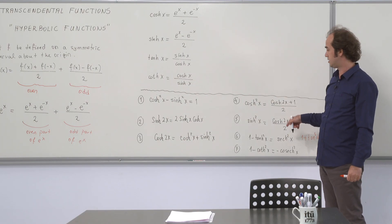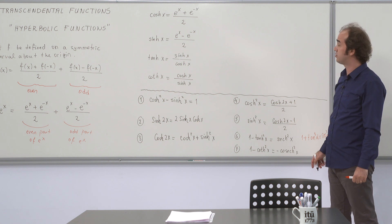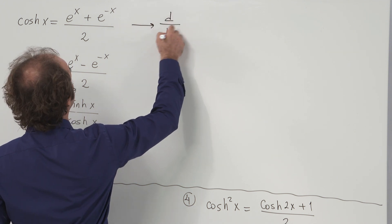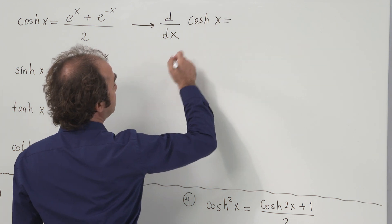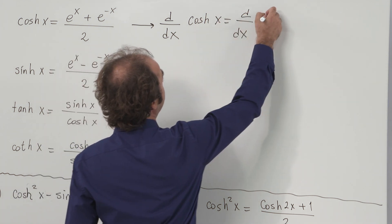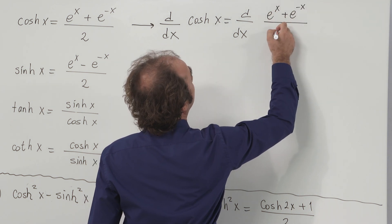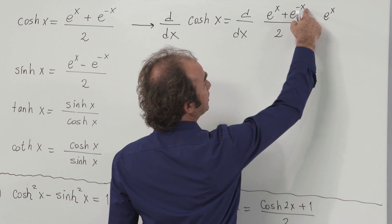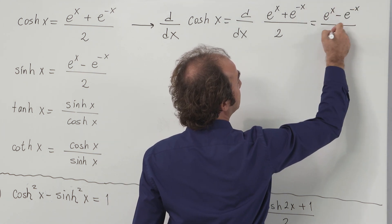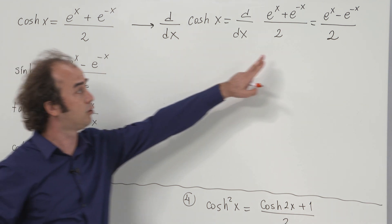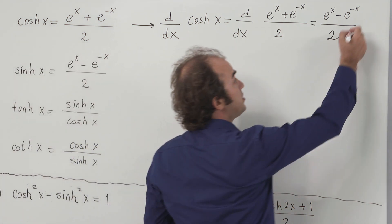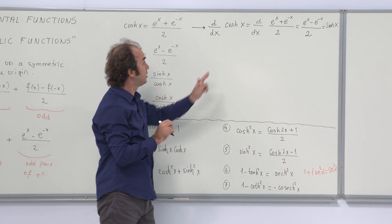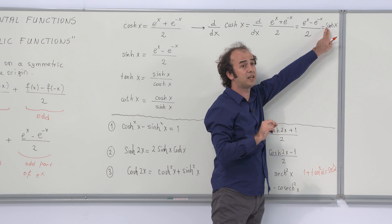After seeing these basic identities, let's pass to the derivatives. We are wondering what the derivative of hyperbolic cosine of x may be. This is quite a simple procedure: differentiate using the exponential form. The derivative of e to the x is e to the x, and the derivative of e to the minus x is minus e to the minus x. We see that the derivative of cosh x equals sinh x — not with a minus sign, quite similar to the trigonometric case.